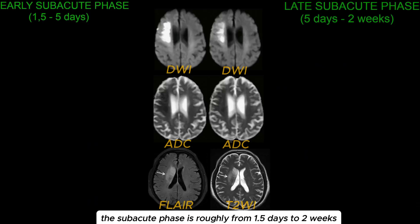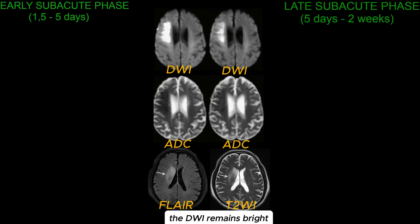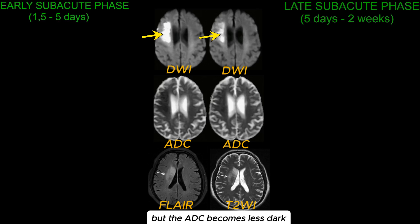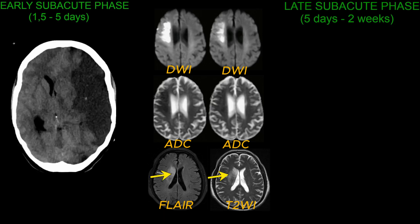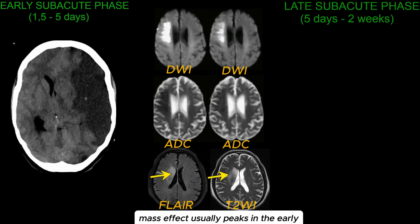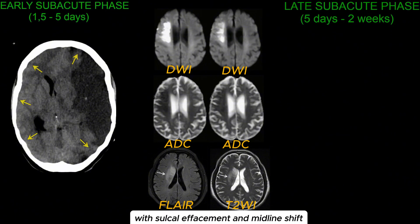The subacute phase is roughly from 1.5 days to 2 weeks, and we can divide this into the early and late subacute phases. The DWI remains bright, and this is typically due to T2 shine-through, but the ADC becomes less dark. The FLAIR and T2 changes are still bright. Mass effect usually peaks in the early subacute phase, with sulcal effacement and a midline shift, as demonstrated here.